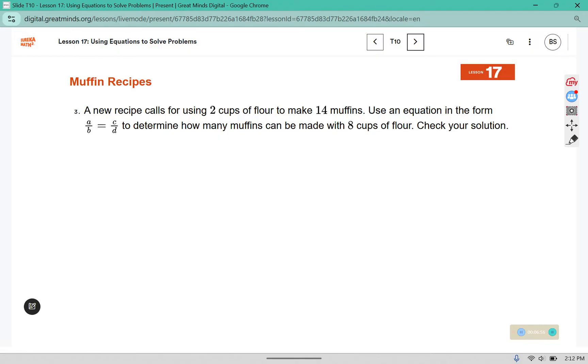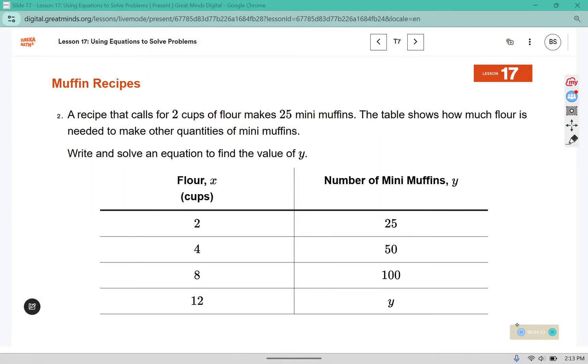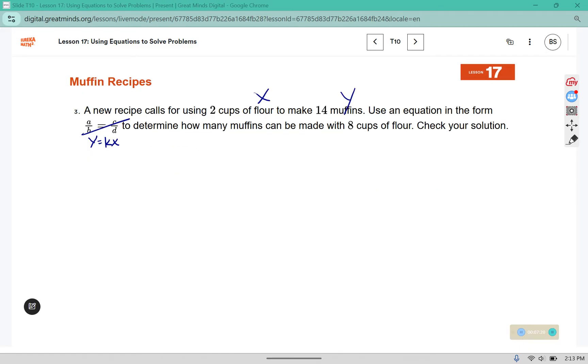A new recipe calls for using 2 cups of flour to make 14 muffins. Use an equation in the form of, we're going to swap this out for y equals kx. To determine how many muffins can be made with 8 cups of flour, check your solution. Back here we had x was the flour and y was the muffin, so we're going to continue to use those variables. x equals x for flour and y for muffins.